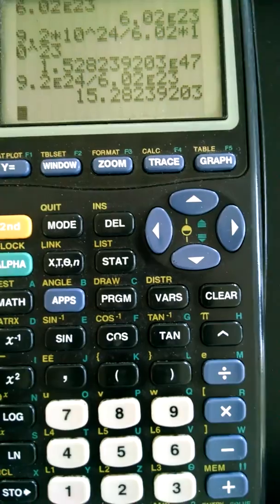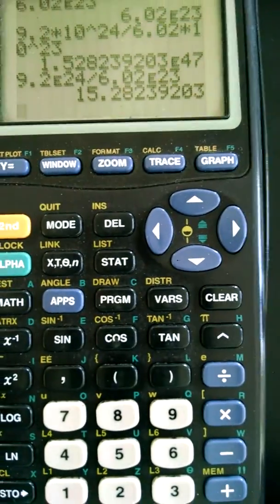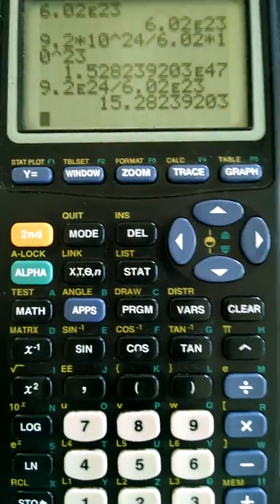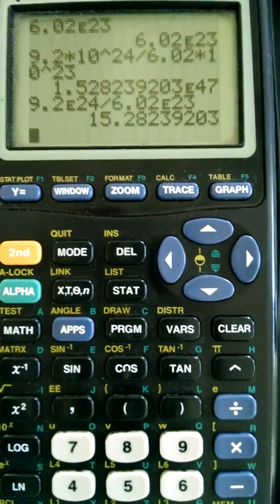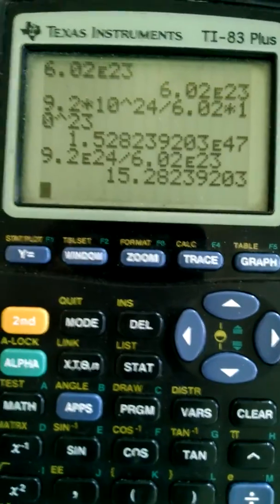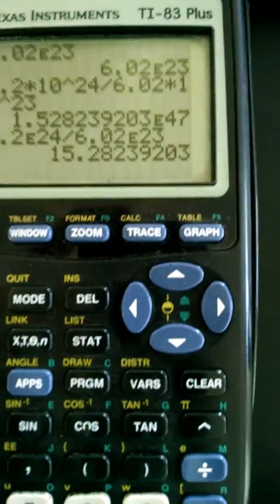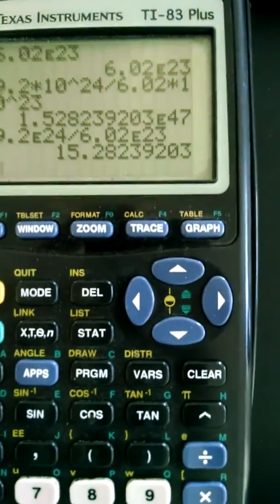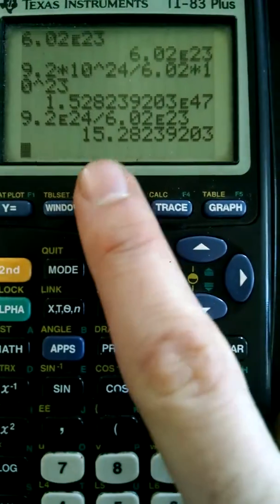We get 15.28, or I guess if you use sig figs, 15 moles of silver, if we're working with silver again, which is correct. So note, all the numbers are the same. It's just you're off by so many zeros the first time. This one is your correct answer.